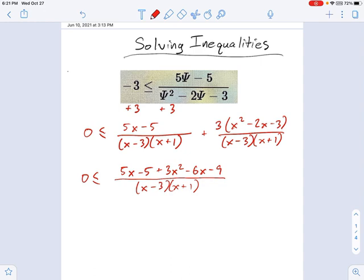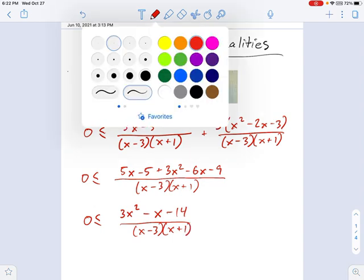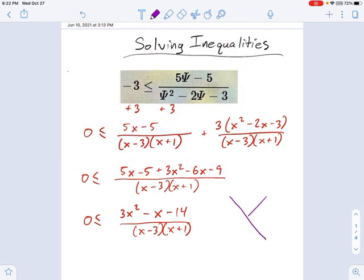And now we just combine some terms until this is a little simpler to deal with. There's no combining the 3x squared. That just is what it is. But minus 6x plus 5x, that's going to be minus x. Minus 9 minus 5 is minus 14. You can see this is getting better. And I need to factor this, which is not obvious to me how it needs to factor. So I'm going to use a big X.